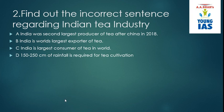The next question asks to find the incorrect sentence regarding the Indian tea industry. As we know, after water, tea is the most widely consumed beverage in the world. Recently, five tea-growing and consuming countries made a union named the Asian Tea Alliance. India was the second largest producer of tea after China in 2018 — correct. India is the world's largest exporter of tea — this is wrong. India is the fourth largest exporter, not the largest. India is the largest consumer of tea in the world — correct. India consumes almost three-fourths of tea produced every year.